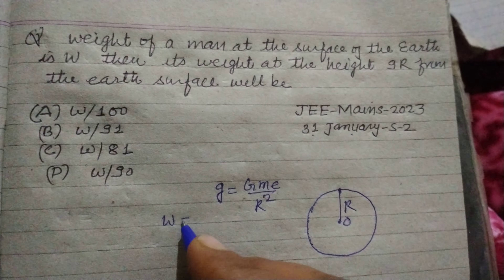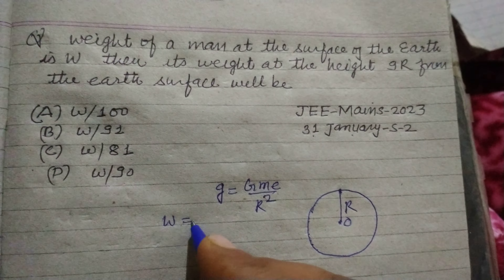The weight of the man at the earth's surface is W = Mg = GmE / R². This is the weight at the earth's surface.